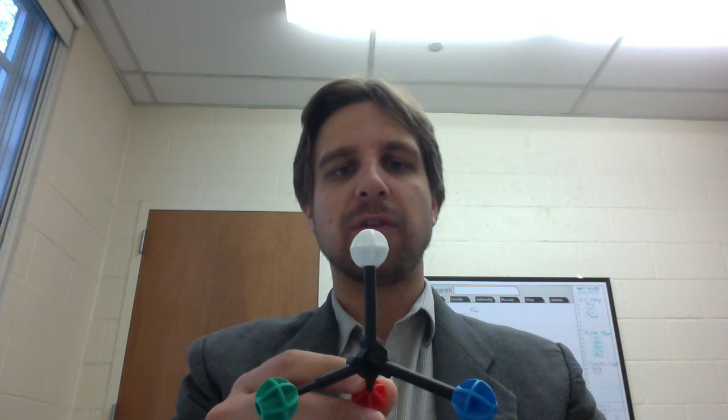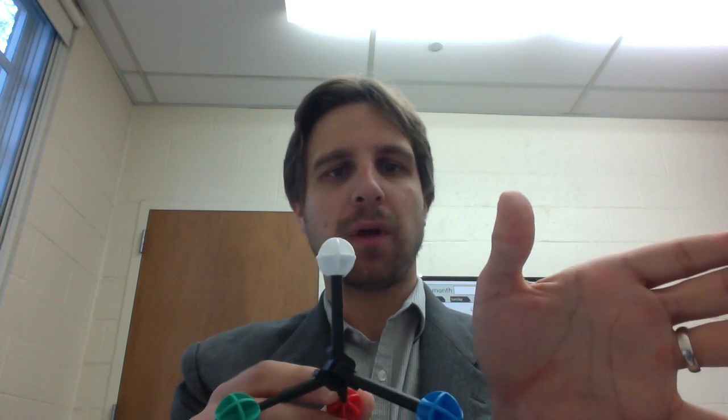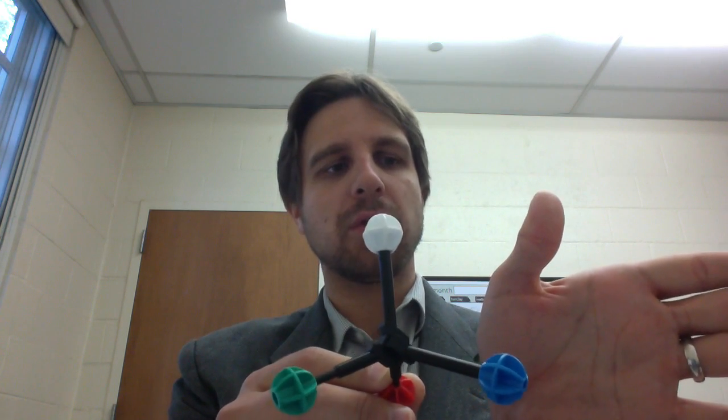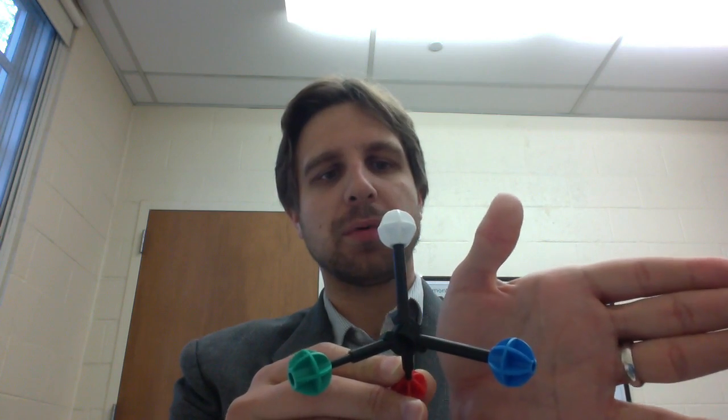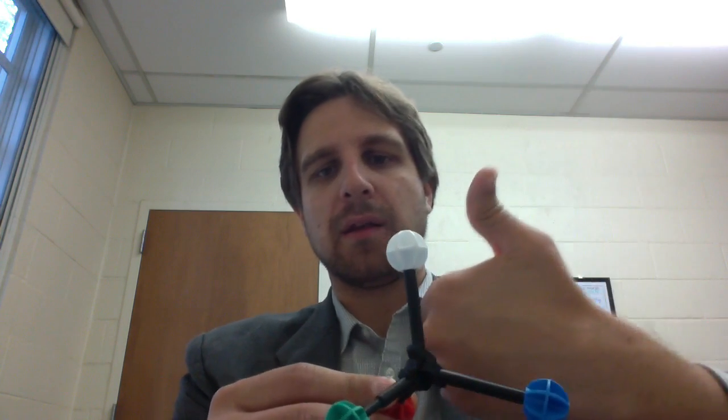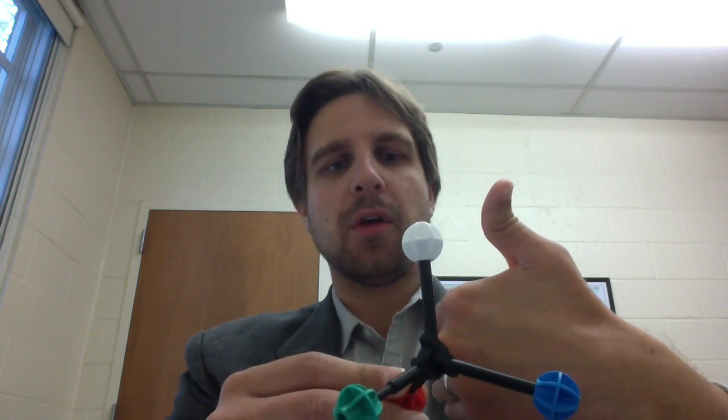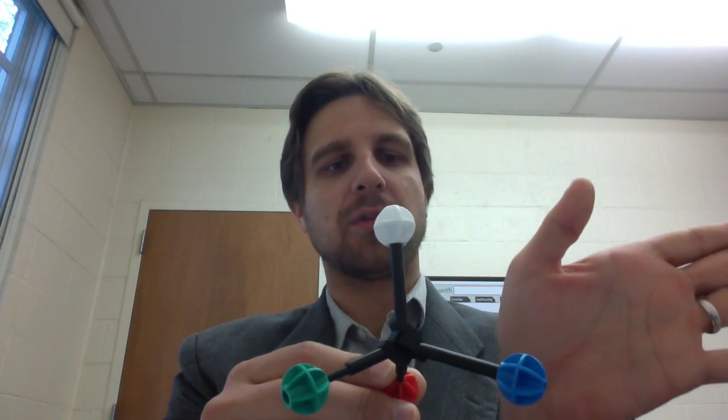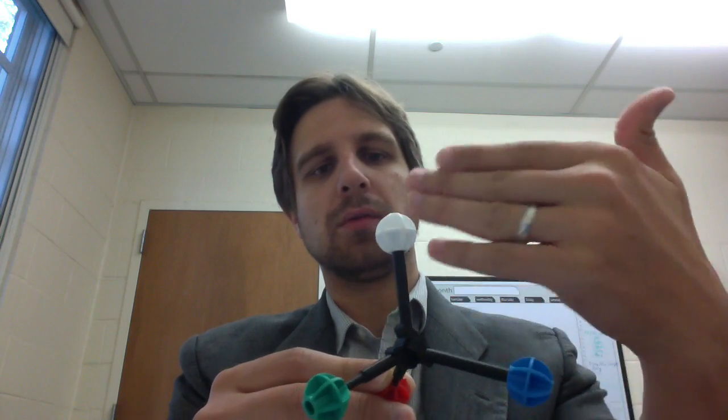What you do is you define your thumb along the lowest priority group, and then you close your hand inwards starting from the priority one group to the priority two group and ending on the priority three group. We can see that this molecule here, if we use our left hand, we go from one to two to three.